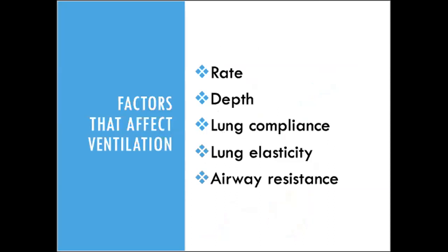Things that affect our ability to ventilate include rate and depth. Rate is how fast we breathe; depth is how much we expand our lungs to take air in. These processes affect oxygen and carbon dioxide levels in the blood. Lung compliance refers to the ease of the lung inflating — normally the lungs inflate easily, but compliance is reduced by increased lung water such as edema, loss of surfactant, or conditions that replace elastin fibers with scar tissue or collagen.